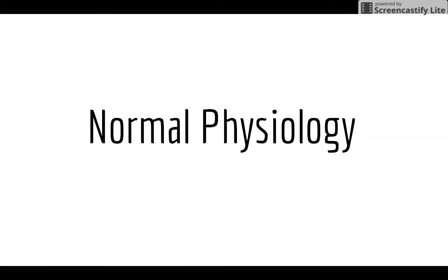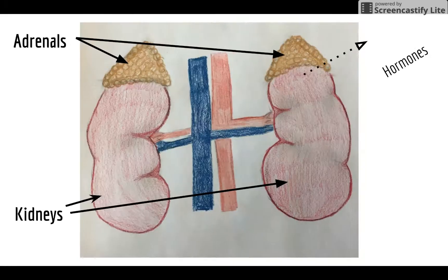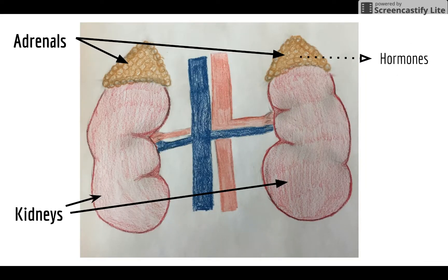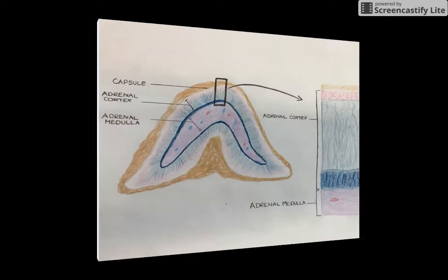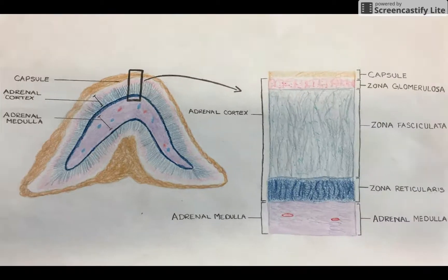Normal physiology: the adrenal glands are located just above your kidneys. As part of your endocrine system, they produce hormones that play a vital role in the organs and tissues within your body. Your adrenal glands are composed of two sections — the interior medulla, which produces types of adrenaline hormones, and the outer layer called the cortex, which is the focus with Addison's disease.